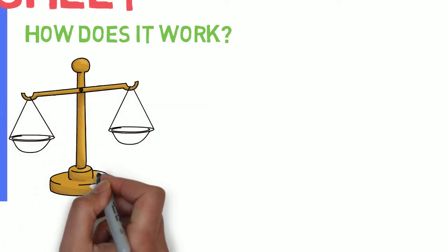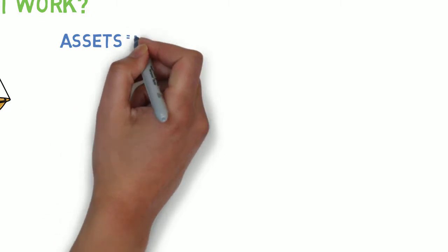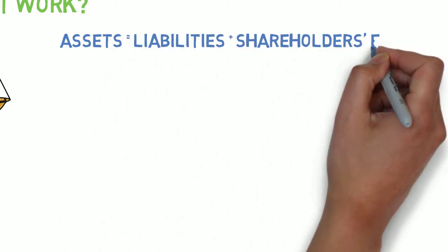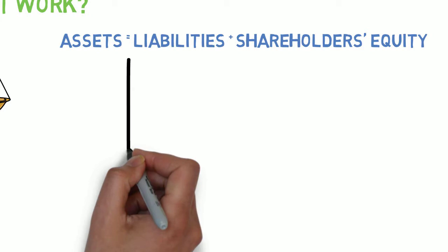So how does it work? It's called a balance sheet because it obviously has to balance. So we take the three parts, assets being on the left side and liabilities and shareholders' equity being on the other side.